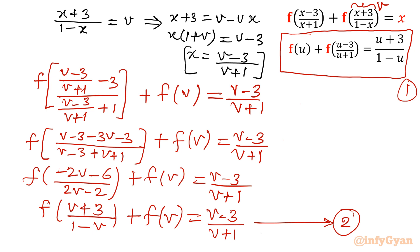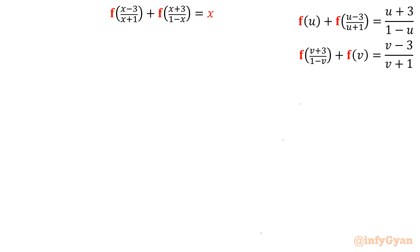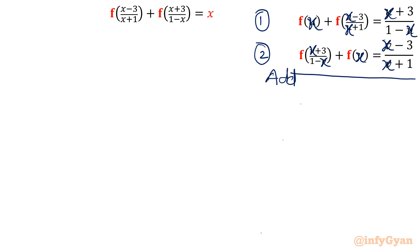Now I change variables: replace u and v with x in both equations. This is the change of variable technique used in functional equations. If I add both equations, twice f(x) plus the two function terms appear — and those two terms together are exactly the given equation: f of (x minus 3 over x plus 1) plus f of (x plus 3 over 1 minus x).